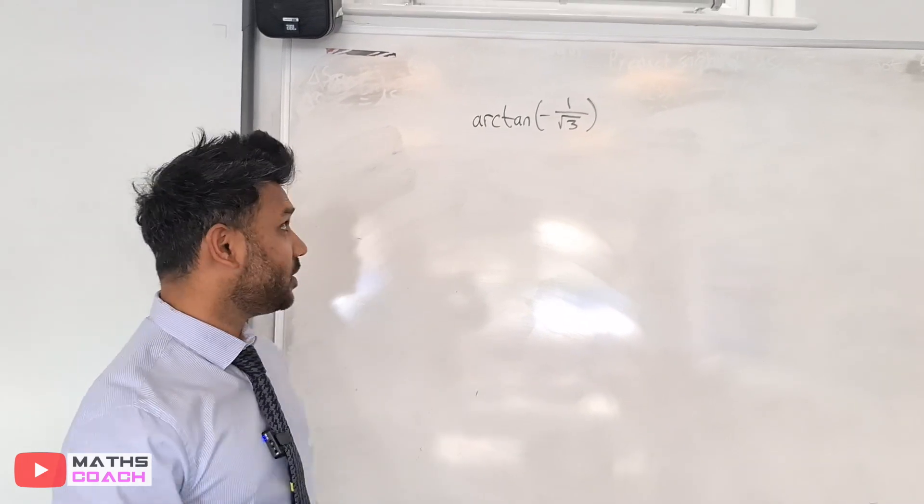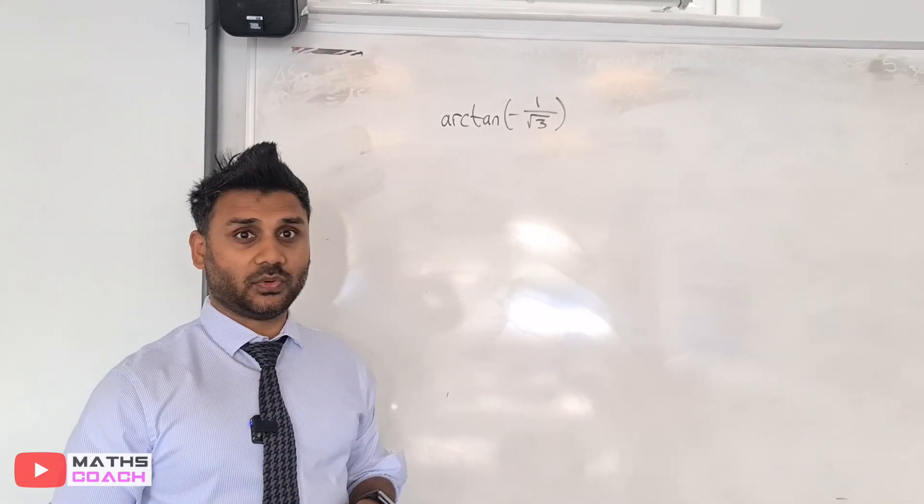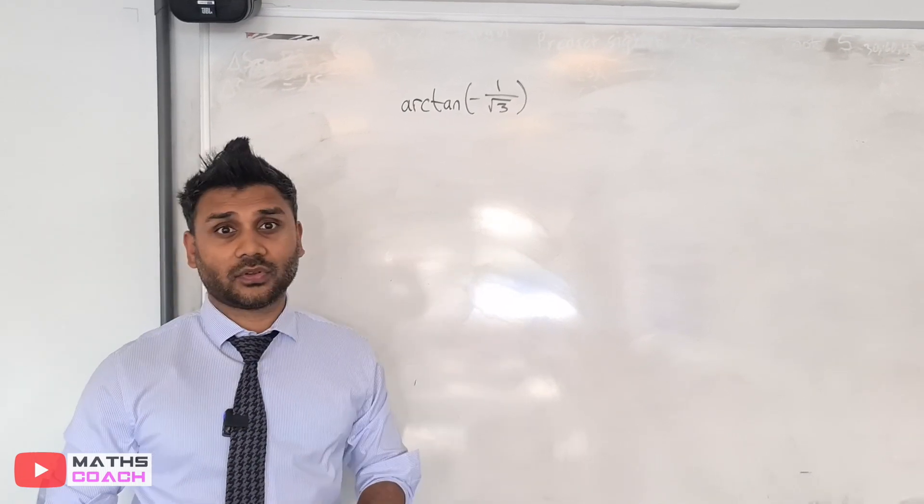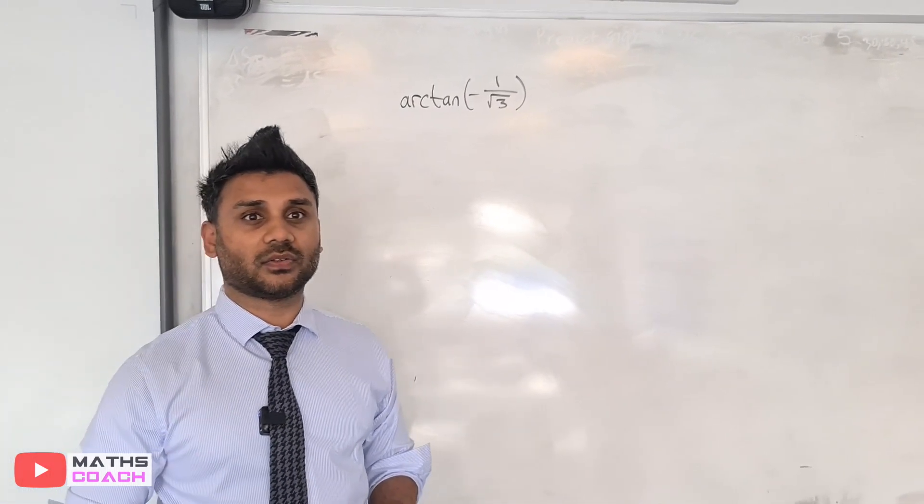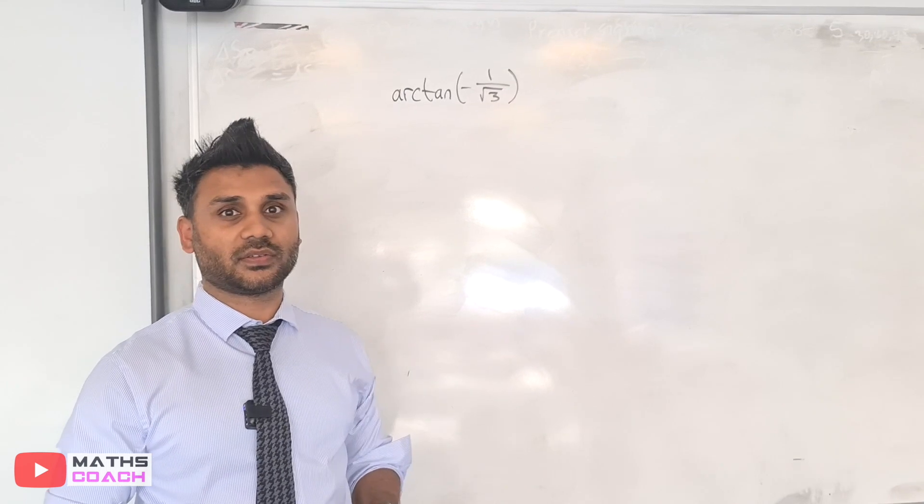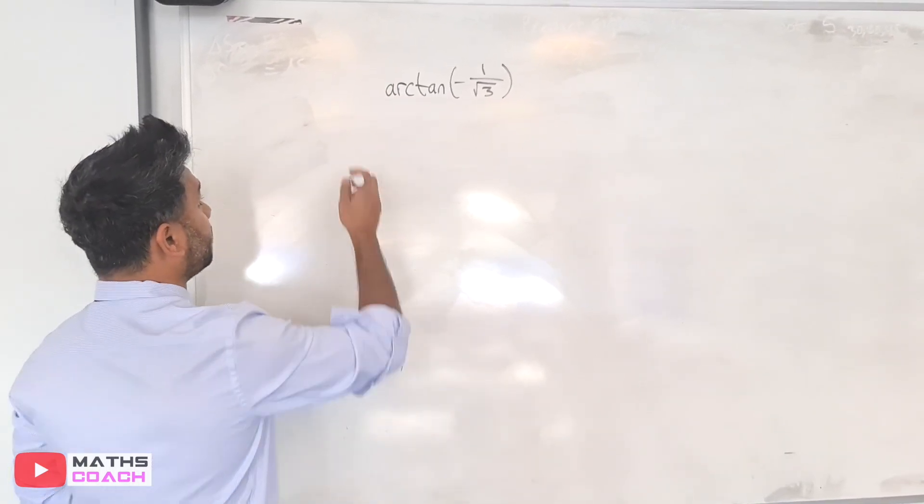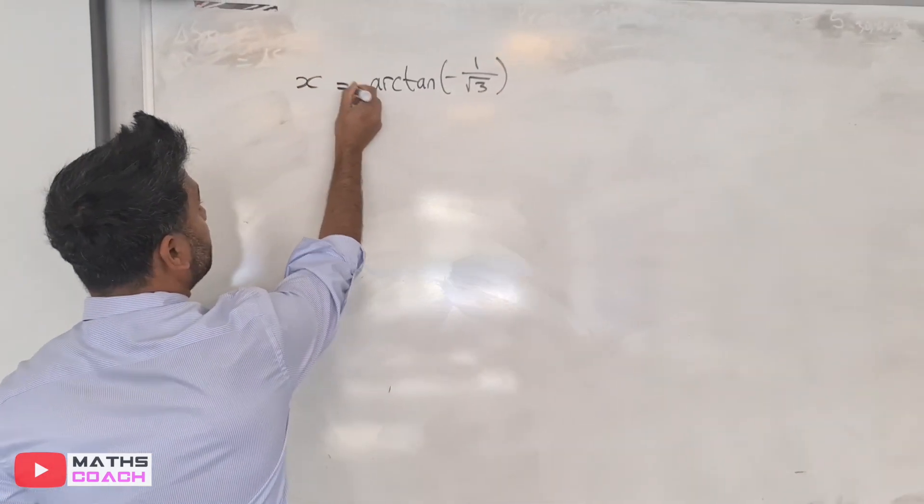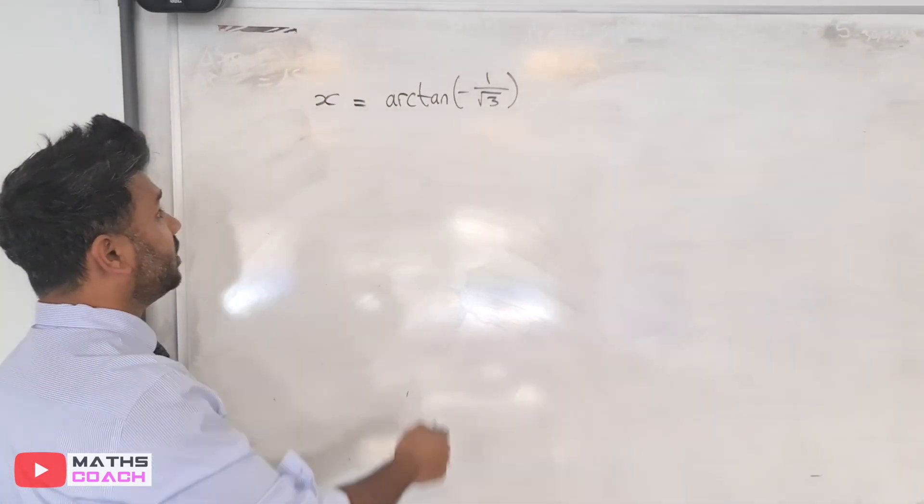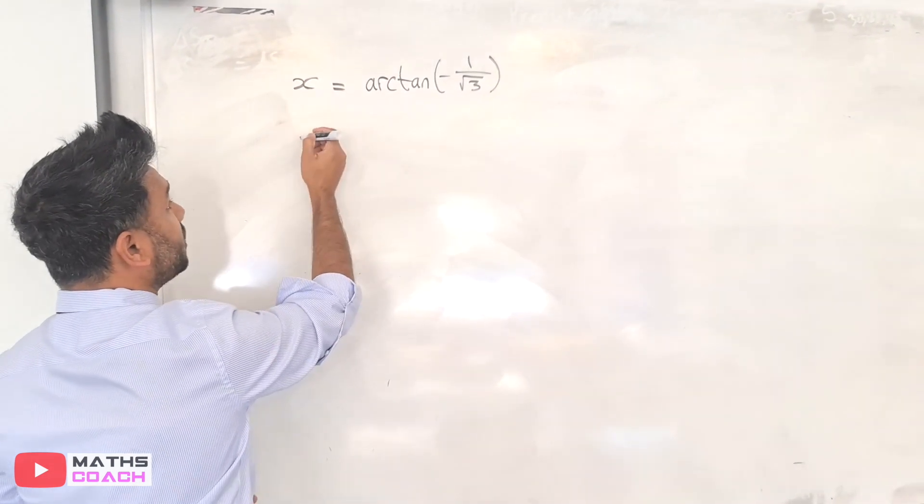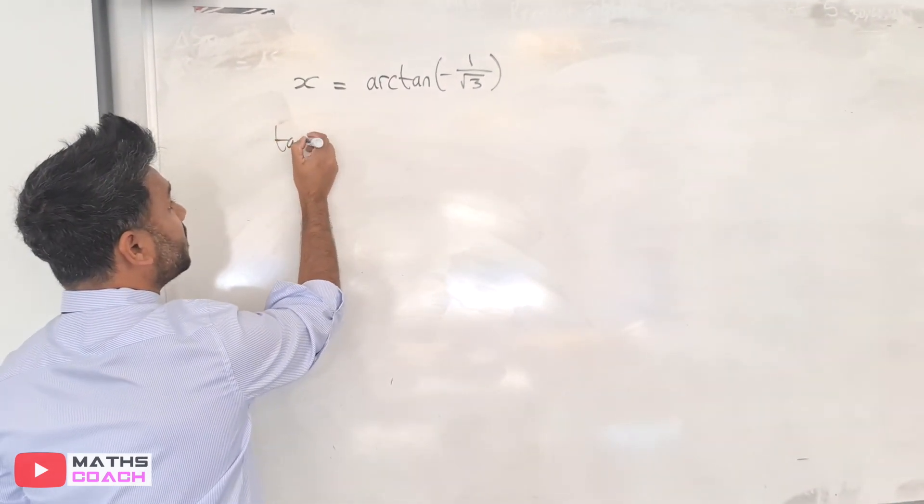Hi, today we're going to be tackling the question on the board. It is for A-level students who may go off to universities where they might be asked to answer questions like this without using a calculator. So to begin, we can say that let x become this expression here, and if you take the arctan to the other side and do the opposite of arctan, which is simply tan.